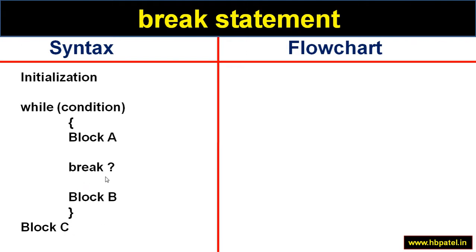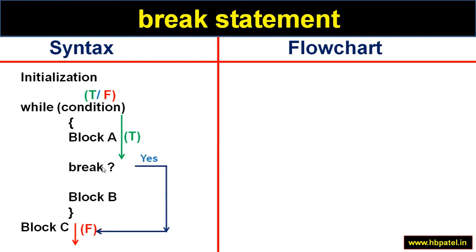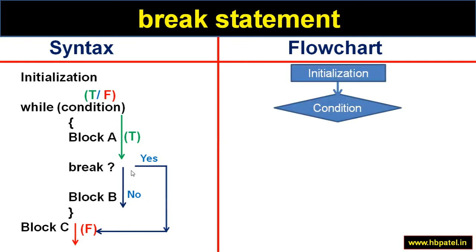Now let us understand the break statement. The structure is similar: inside the loop we use break with a condition. If the condition is false, the loop doesn't execute. If true, block A executes, then we check whether break is to be executed. If break is executed, we exit the loop entirely — skipping block B and not even going back to check the condition. If break is not executed, block B executes and we go back to the condition.